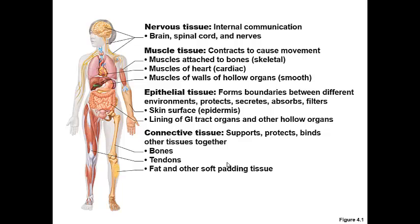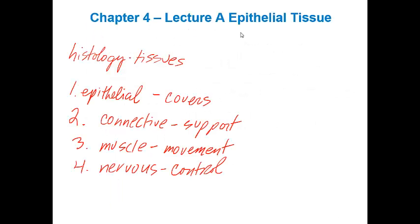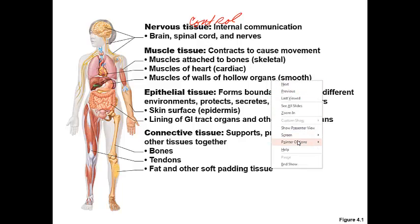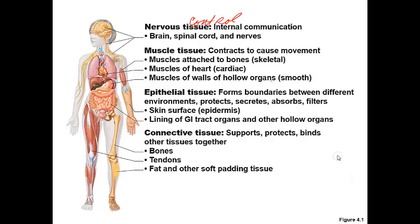Our next slide here is showing the four major types of tissue and where they're going to be located in the body. Nervous tissue is going to be for control, and it's going to be found in the brain, the spinal cord, as well as making up nerves. The muscle tissue is going to be contraction and movement, and there's three types: skeletal, cardiac found in the heart, and smooth muscle tissue.